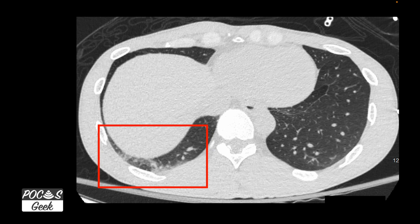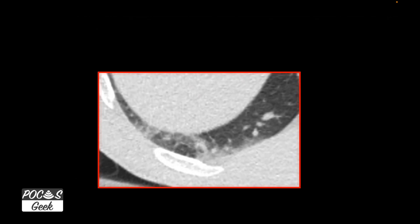A lot of that was probably due to the liver blocking it in the anterior-to-posterior view. But it can be really hard to see on chest X-ray. Zooming in on the CT, we can see that pathology and consolidation right through there.